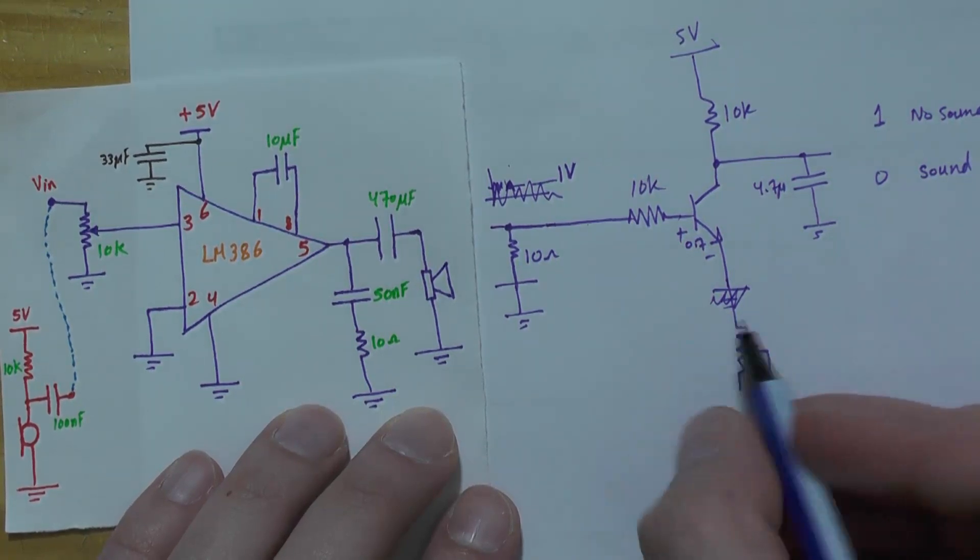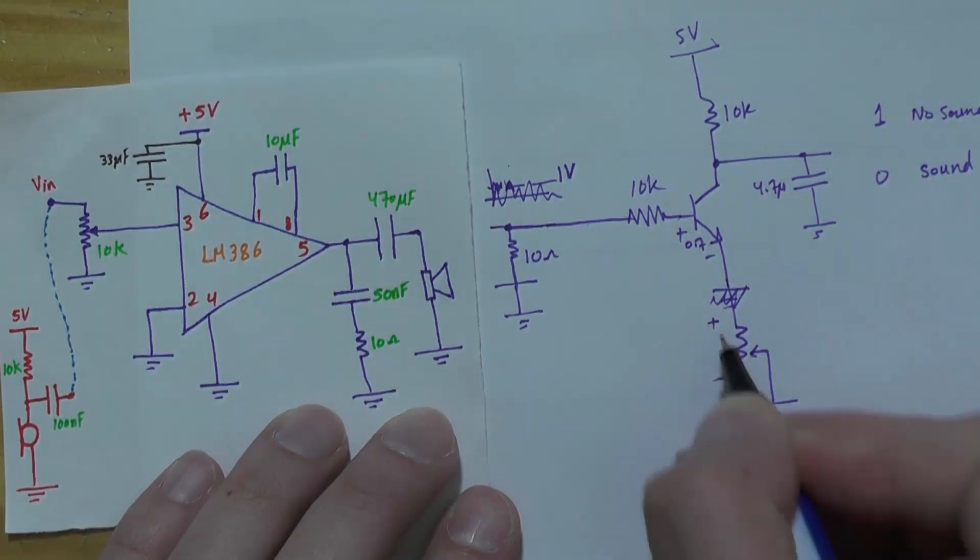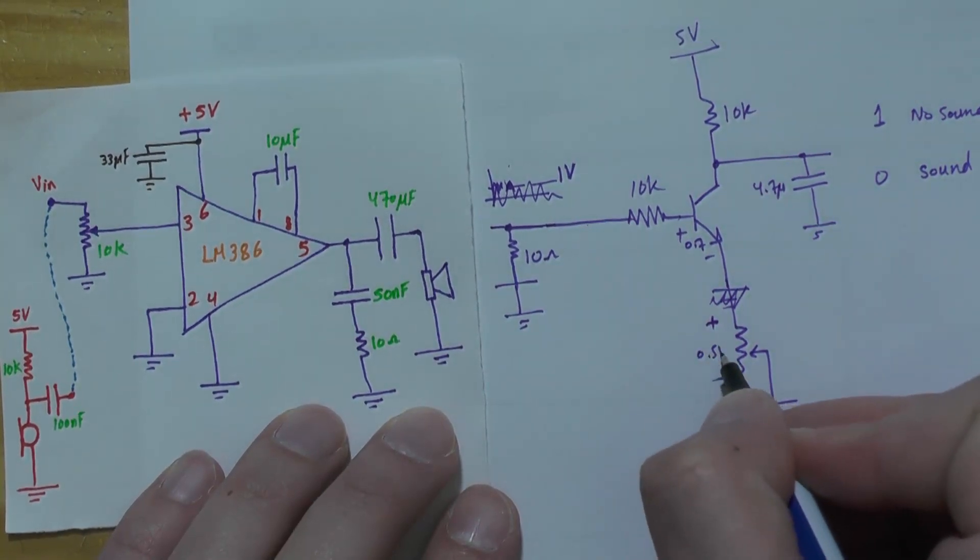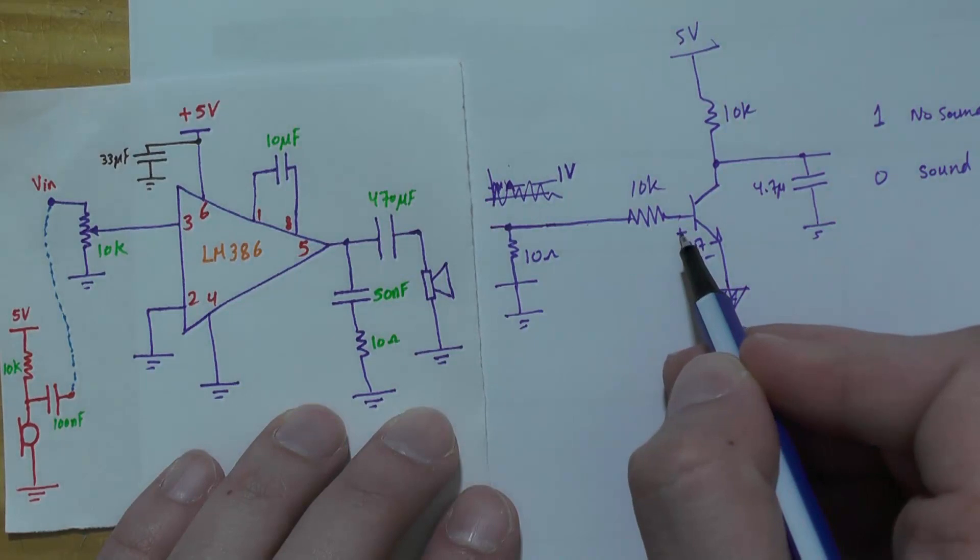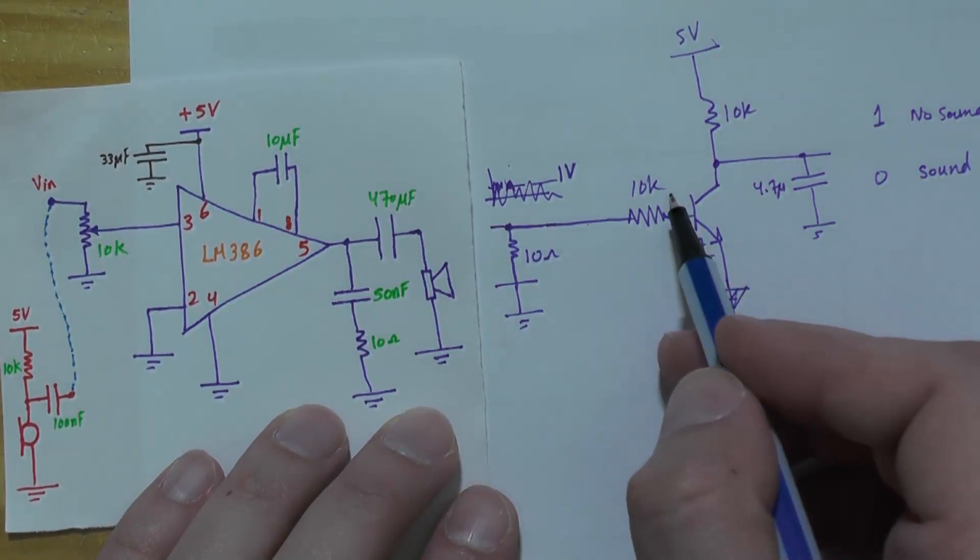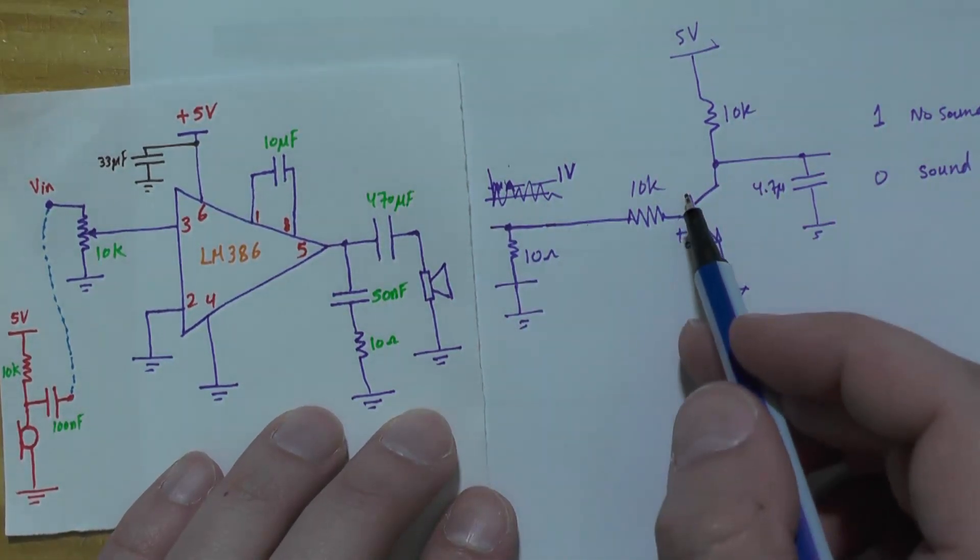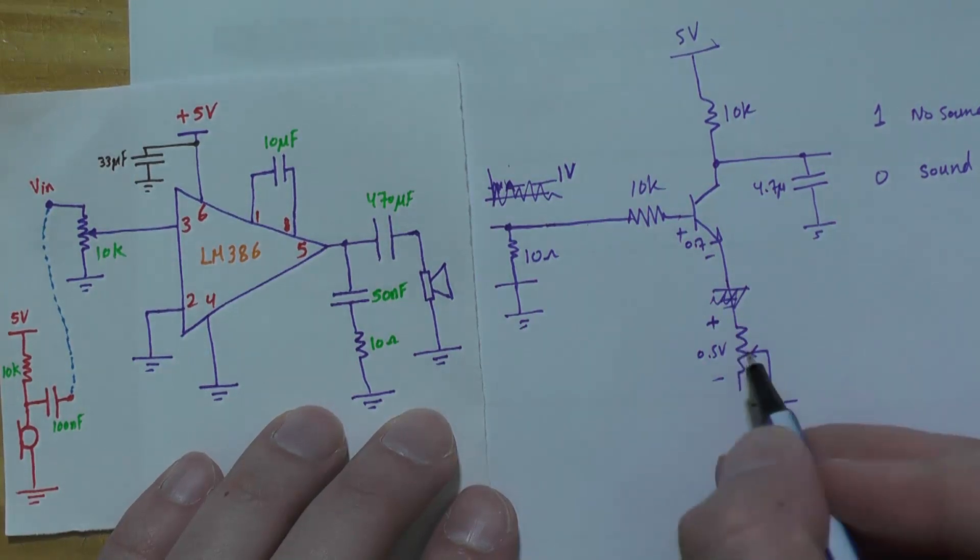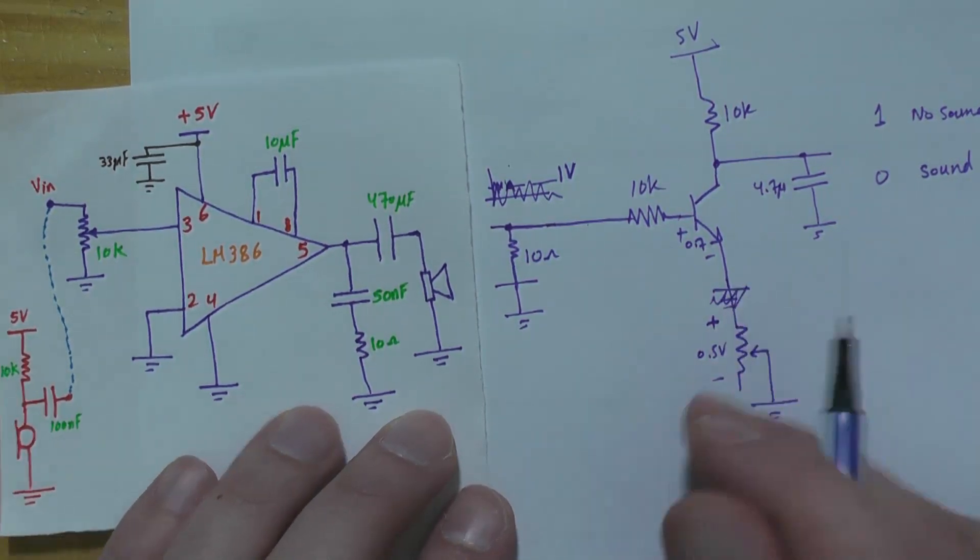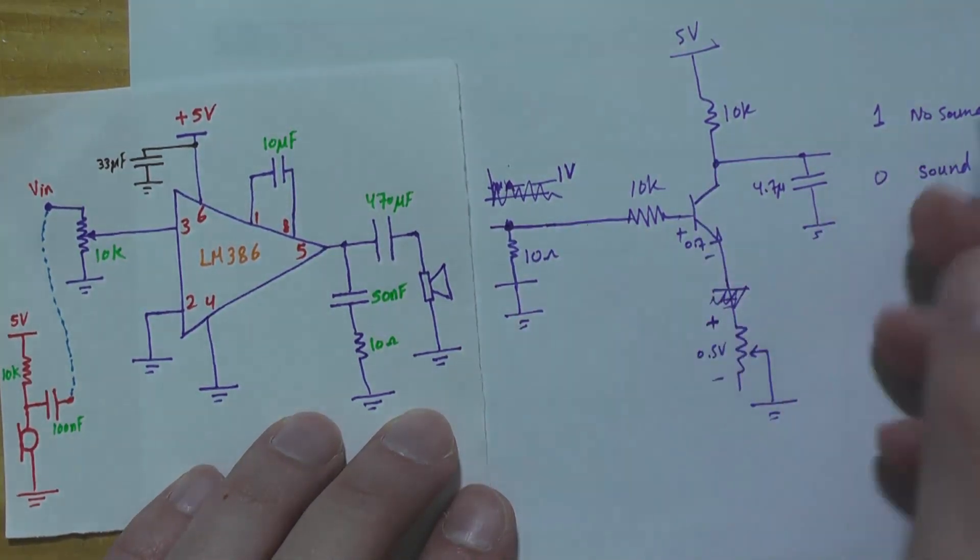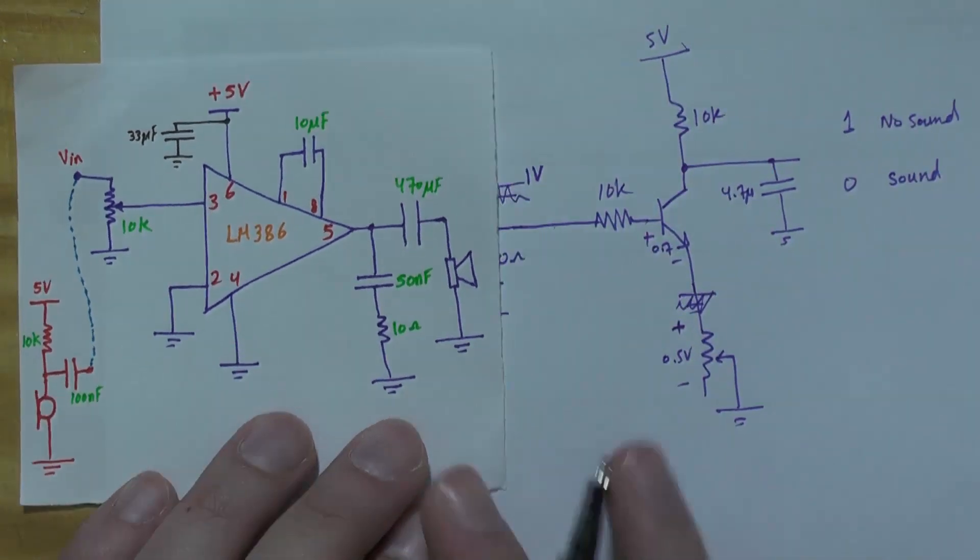This resistor is dropping some voltage. If it's dropping maybe 0.5 volt, then 0.5 volt plus 0.7 volt means we should have at least 1.2 volt applied from the amplifier to make this work. We can control this level by the potentiometer and control how much voltage we need to make this turn on and supply one and zero.